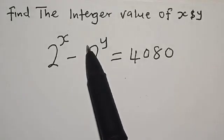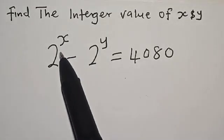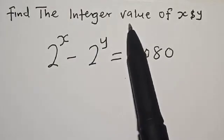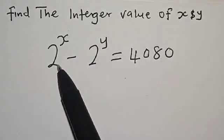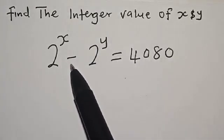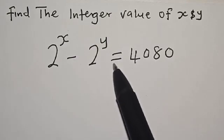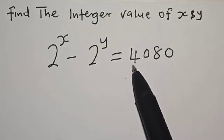Welcome to Math Gist. In this class, we want to find the integer values of x and y, where 2 raised to the power x minus 2 raised to the power y is equal to 4080.